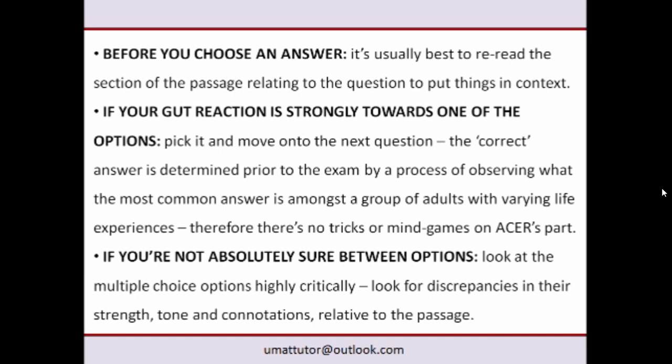The correct answer in Section 2 is selected because the exam is given to a cross-section of adults with different life experiences, and the correct answer is simply the one chosen the majority of the time. So if you read a Section 2 question and your gut reaction strongly pulls you toward one option, you should go for it — that's essentially how the correct answer is selected. If you feel strongly toward one answer, it's probably not a trap, so just fill it in and move on.